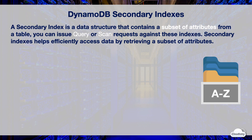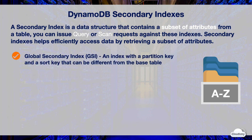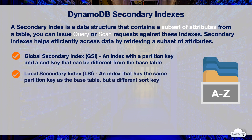DynamoDB supports two types of secondary indexes: Global Secondary Index and Local Secondary Index. A Global Secondary Index, or GSI, is an index with a partition key and a sort key that can be different from the base table. Queries on the GSI can span all of the data in the base table across all partitions. A GSI is stored in its own partition space, separate from the base table, and can scale independently.